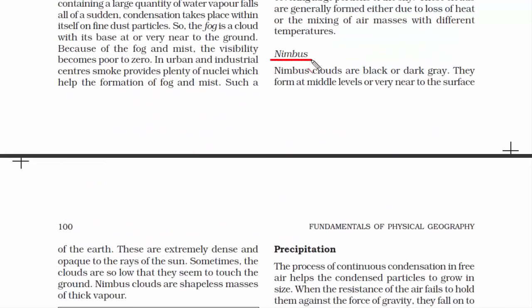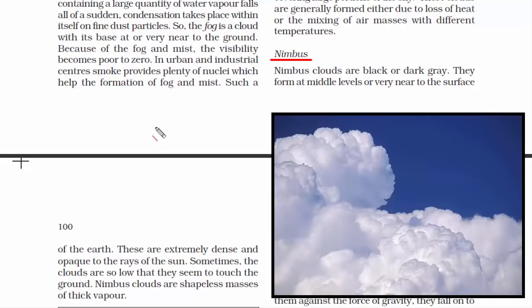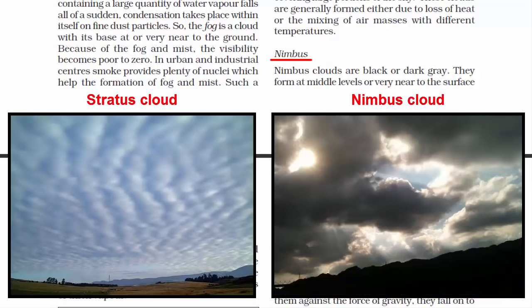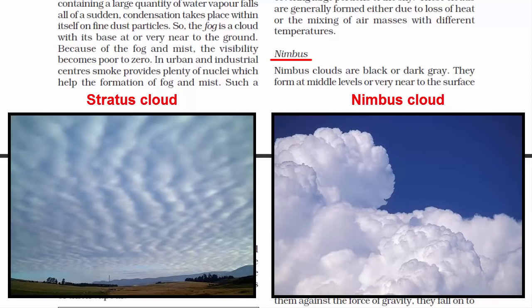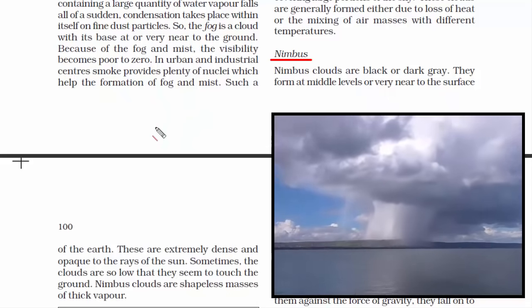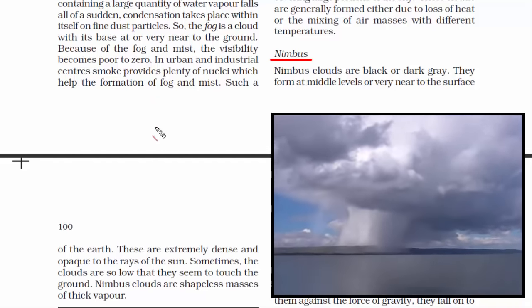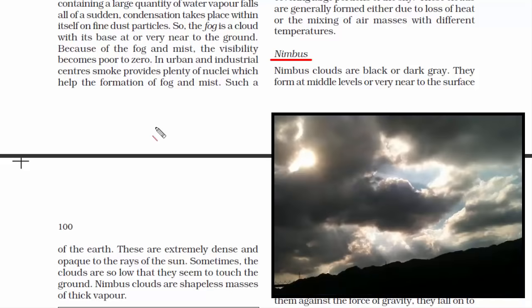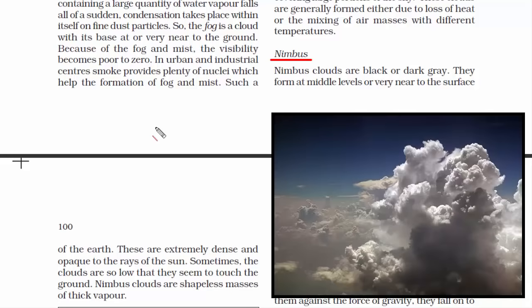The fourth and last type is nimbus cloud. These clouds are black or dark gray and exist in the form of layers, similar to stratus clouds, but they are not the same. They are formed at low altitude, around 3 kilometers, and are sometimes very near to the surface of the earth. Their dark color makes them dense, blocking the sun's rays from reaching the earth's surface. Nimbus clouds do not have any specific shape, but they are thick, dense, and consist of a large amount of water vapor.